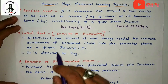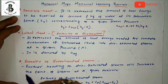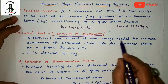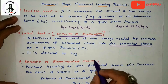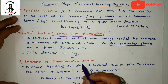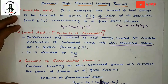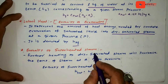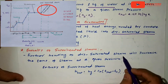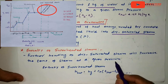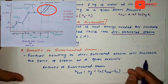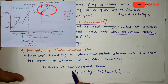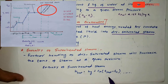An important term is latent heat, or enthalpy of evaporation. It represents the amount of heat energy needed for complete evaporation of saturated liquid into dry saturated steam at a given pressure, and it is denoted by hfg. A third term is enthalpy of superheated steam — further heating of dry saturated steam increases its temperature at a given pressure. The formula is: H_superheated = hG + Cp × (T_superheated − T_saturated).